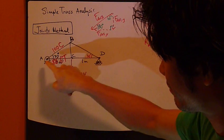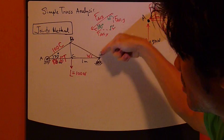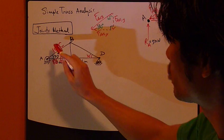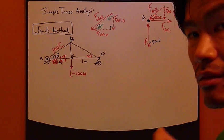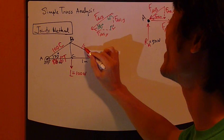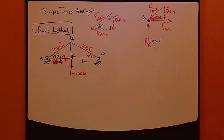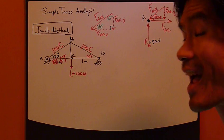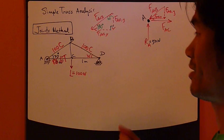So AB has the exact same loading as BD. Now, as soon as we found out that AB is 100 Newton compression, this means that BD, right away, is also 100 Newton compression. It's exactly the same. You don't have to actually calculate it because it's mirror image.